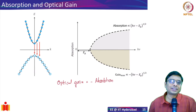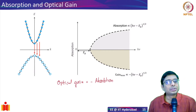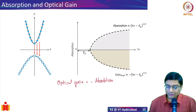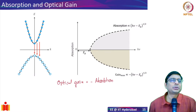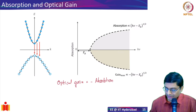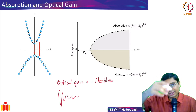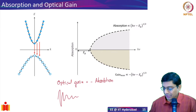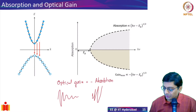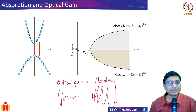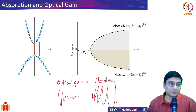If the gain or absorption coefficient is negative, consider a wave propagating in some medium. If you have significant loss, the amplitude reduces over distance — that is the absorption process. Whereas if absorption is negative (i.e., gain), the amplitude keeps growing over distance. That's why we call it gain: the amplitude envelope grows rather than decays.